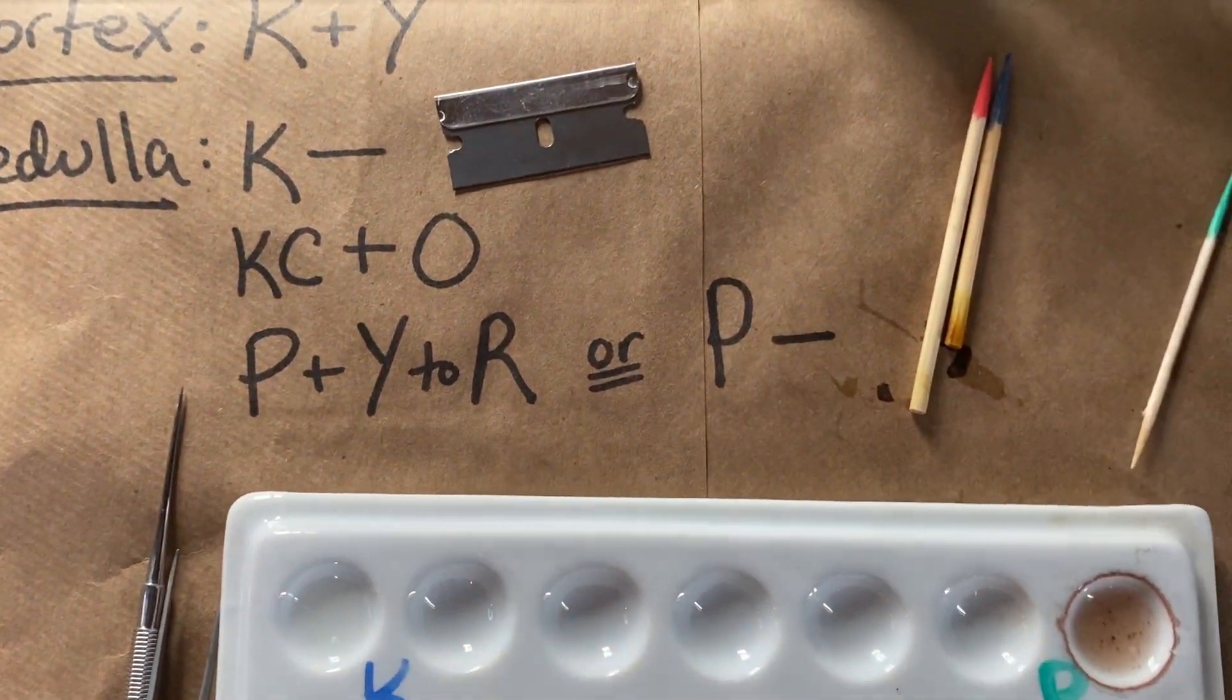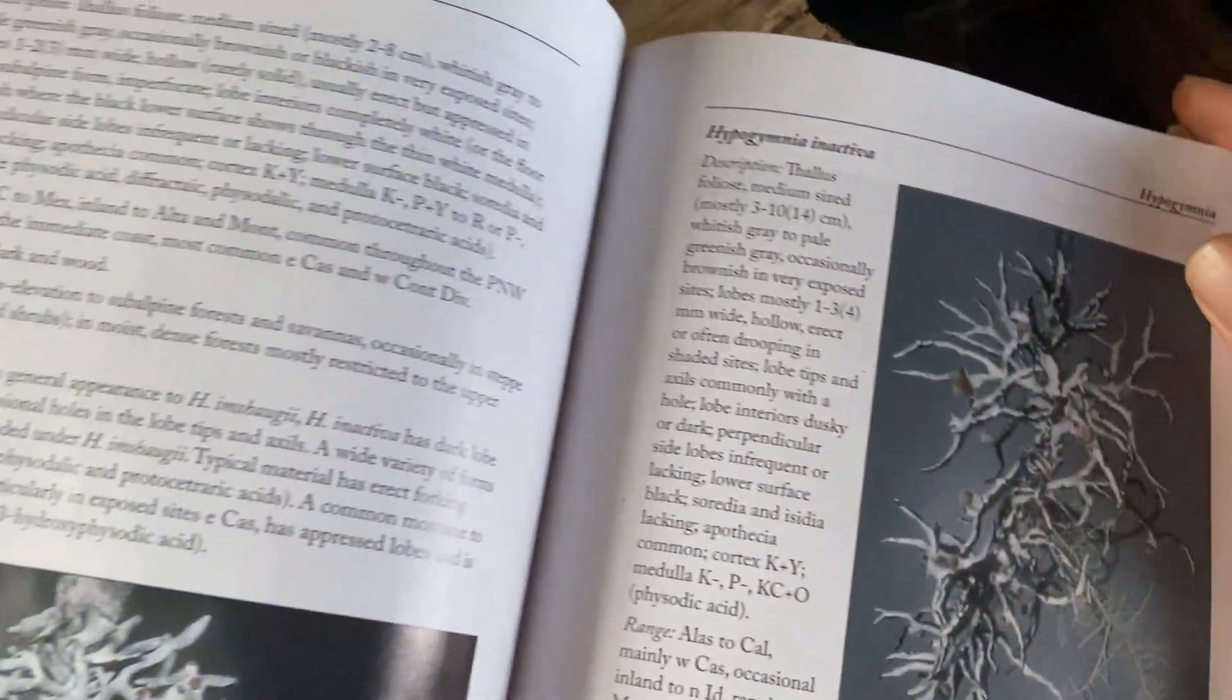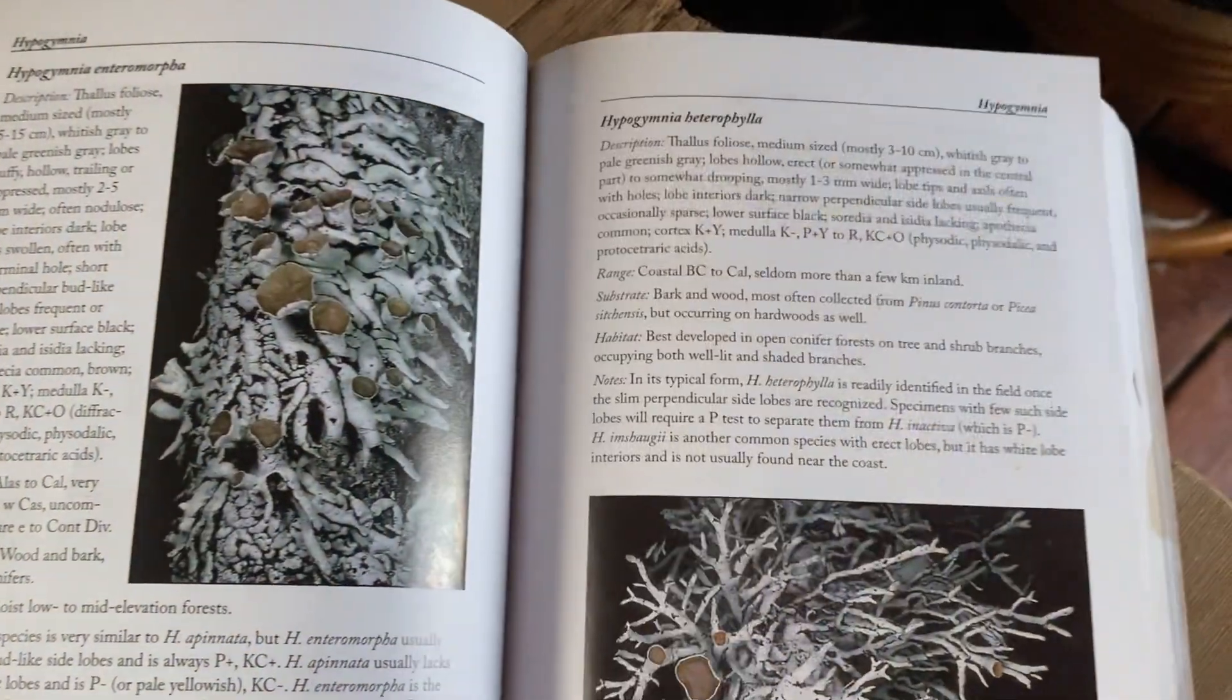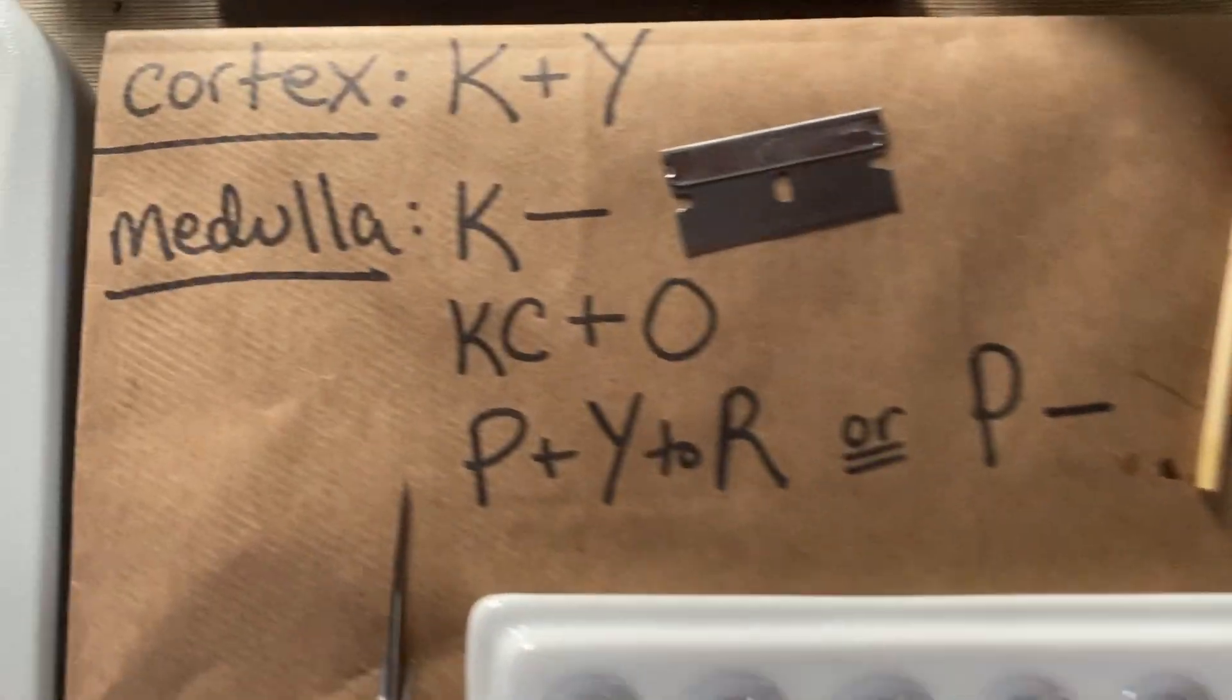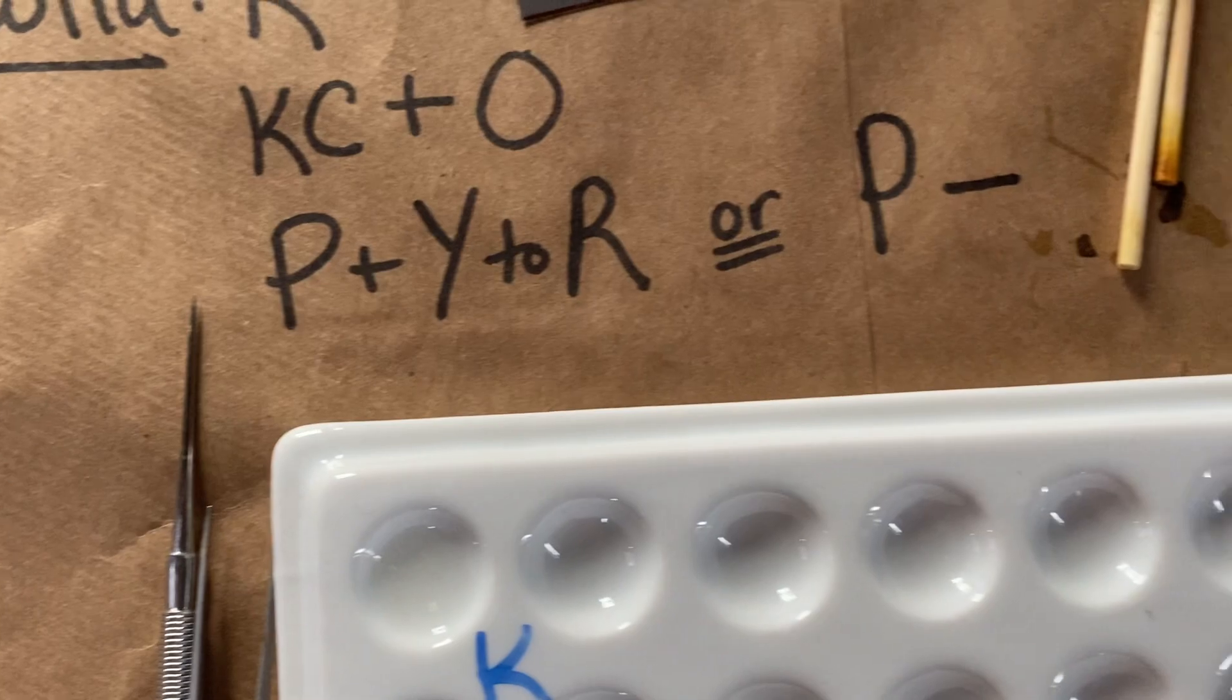Okay, now finally the most exciting test, because this one is going to really tell us whether or not we have Hypogymnia inactiva, if we have no color change with the P, or Hypogymnia heterophila, if our P test gives us a color change of Y to R, meaning yellow to red. So let's see what we have.